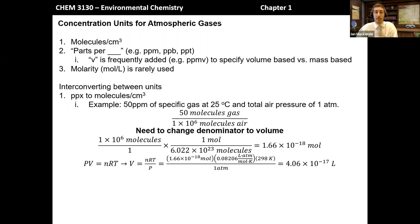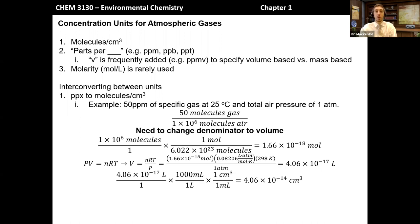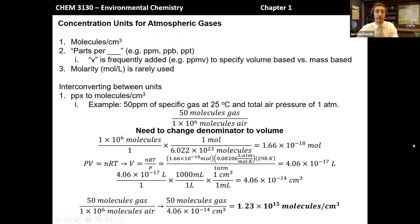We said 25 degrees Celsius, that's 298 Kelvin, and 1 atmosphere. I come out with 4.06 times 10 to the minus 17 liters — a very, very small amount of volume. Then I convert from liters to cubic centimeters by converting liters to milliliters and remembering that one cubic centimeter equals one milliliter. That gives a volume of 4.06 times 10 to the minus 14 cubic centimeters. So my initial 50 molecules per million molecules of air becomes 50 molecules per 4.06 times 10 to the minus 14 cubic centimeters, and dividing gives 1.23 times 10 to the 15th molecules per cubic centimeter. That's how we convert from the PPX scale to molecules per cubic centimeter.